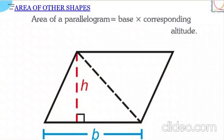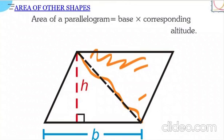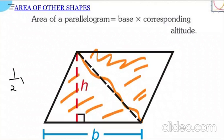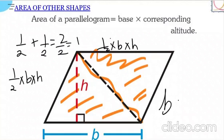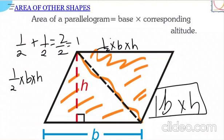Next is the parallelogram, where opposite sides are parallel. Its area is simply base into height. Here's a useful trick: if you divide a parallelogram with a diagonal, you get two triangles, each with area ½ × base × height. Adding them: ½ + ½ = 1, so the total area is base × height.